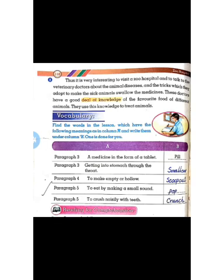To make empty or hollow — the answer is 'scoop out,' from paragraph number four. To eat by making a small sound — the word used in the reading book is 'pop.' To crush noisily with teeth — the word used in paragraph number five is 'crunch.'